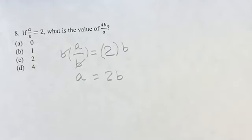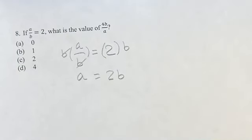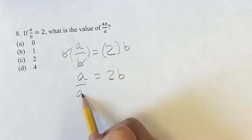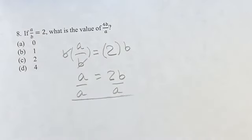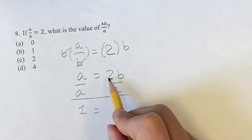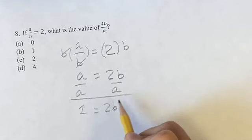So when we want to get b divided by a, well we have b and we have a on this side, so what happens if we divide both sides by a? On this side we have a divided by a is 1, and we get 2b over a.